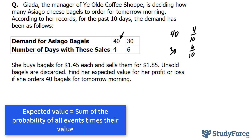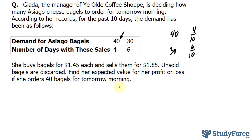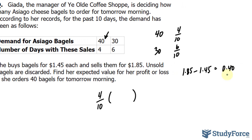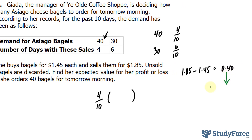So let's say she orders 40 bagels. The probability she will have 40 customers happens 4 times in every 10 days. The value associated with selling 40 bagels is the profit of 1 bagel times 40. To find the profit of 1 bagel: 1.85 minus 1.45 — that's the profit, the difference — and that's 40 cents. Multiplying by the 40 people, we end up with $16. That is the value associated with this probability.